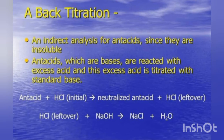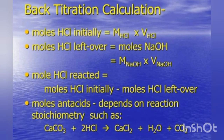Now, what is back titration? Back titration is used for antacids — it is an indirect analysis for antacids since they are insoluble. Antacids, which are bases, are reacted with excess acid, and this excess acid is back-titrated with a standard base. Back titration calculations are done by calculating: moles of HCl initially, then moles of HCl left over, then moles of HCl reacted, and then moles of antacid.